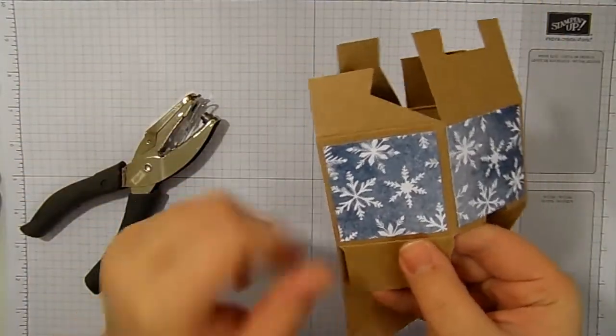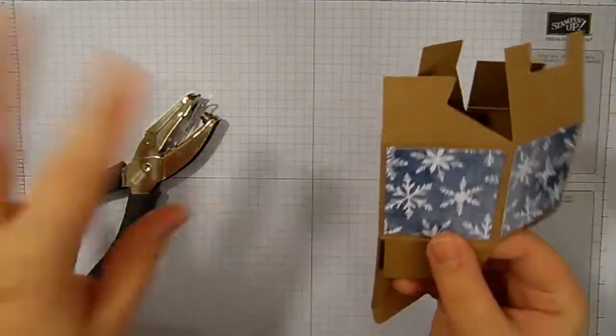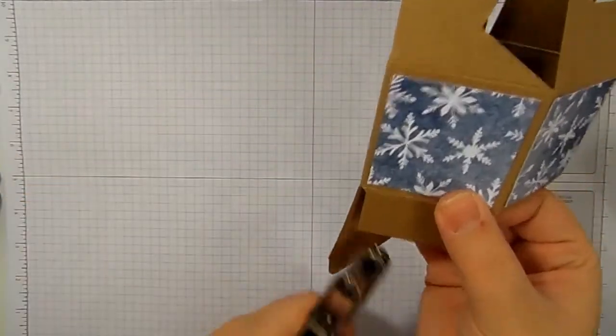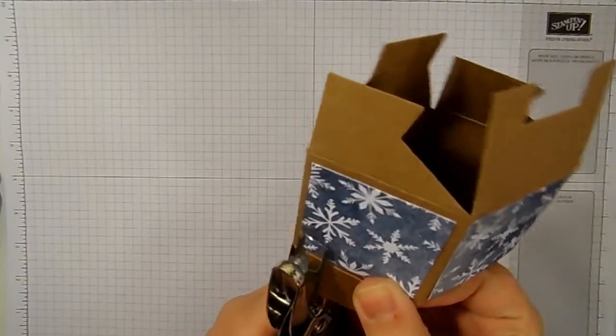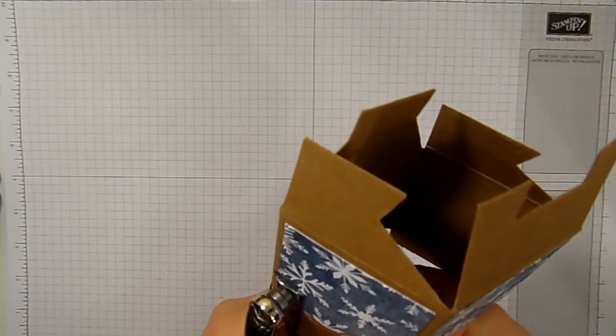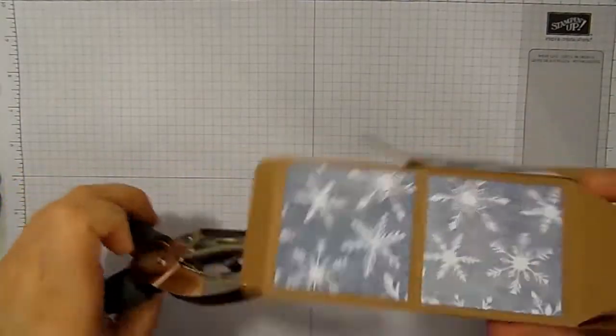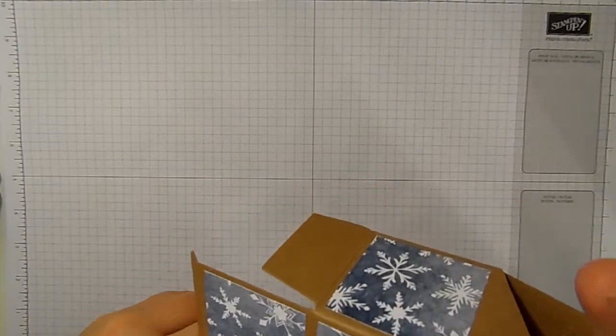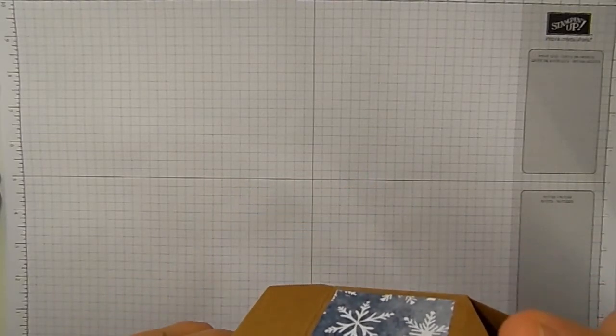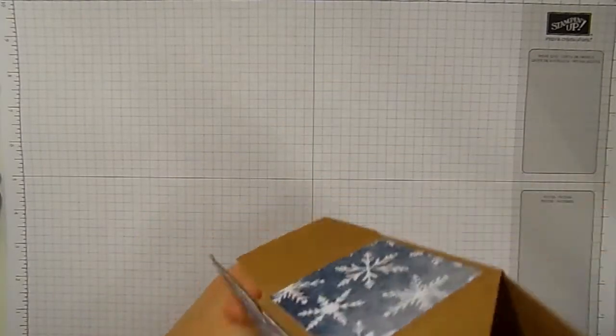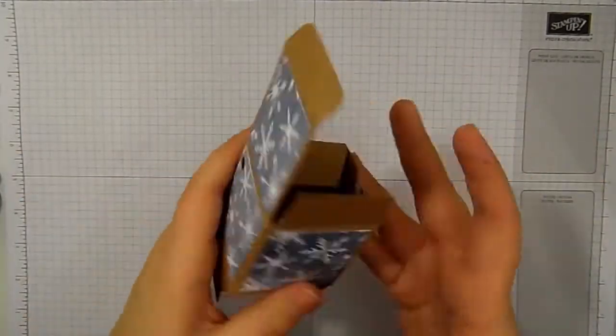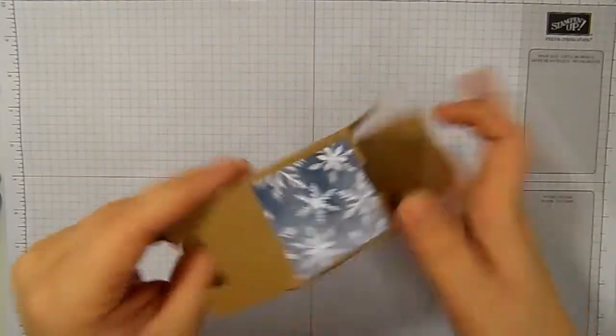What I found easier to do is to punch it first so you've got two indentations. Then you can use those indentations to line up the next two holes and then they are in line with each other. My other top tip when you're doing this is make sure that your hole punch is empty before you start because the fuller your hole punch gets the more difficult it gets to punch. So that is our box completed.